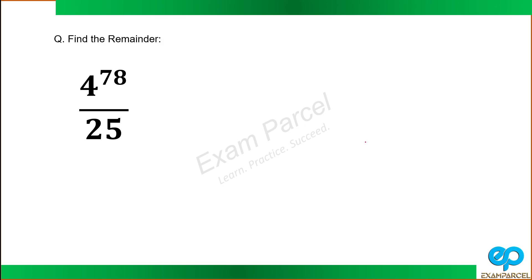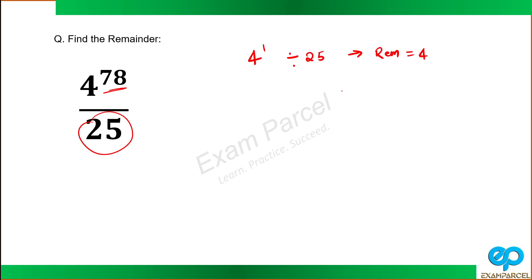This question asks: what is the remainder when 4 raised to power 78 is divided by 25? The power is big. In the concept of cyclicity, what we do is start from the lowest power and go on increasing it to see if there is a pattern in remainders. So 4 raised power 1 divided by 25 gives a remainder of 4. 4 raised power 2 divided by 25 gives a remainder of 16.